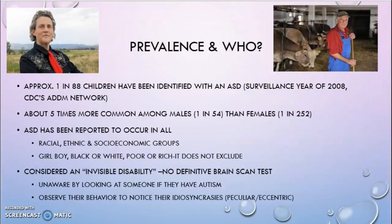Moving on to prevalence and who can acquire or have autism — prevalence is the number of cases of a condition that exists at a particular time in a defined population. As of 2008, approximately 1 in 88 children have been identified with an autism spectrum disorder. It is about five times more common among males, 1 in 54, than females, which is 1 in 252. You'll see that correlate in your classrooms — there are usually more boys in an autistic support classroom than girls.